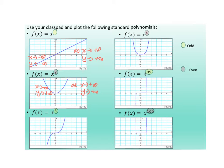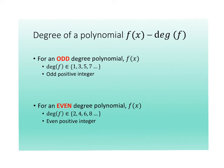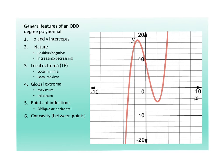For an odd degree polynomial, it's just a polynomial with an odd positive integer as the exponent. An even degree polynomial has an even positive integer. That's the only difference. What we're going to look at is the graphs and interpret things like x and y-intercept, the nature, local extrema, global extrema, point of inflection — whether it's oblique or horizontal — and concavity between points.